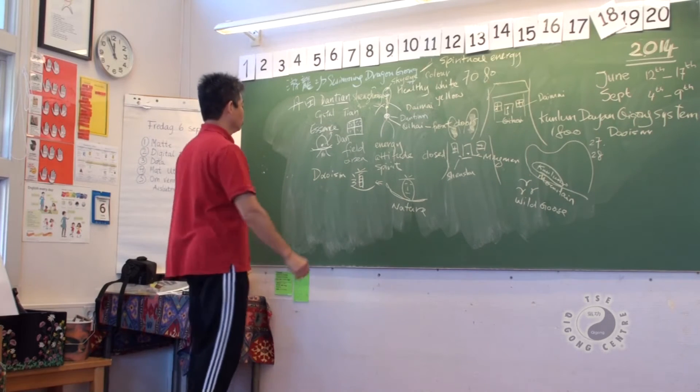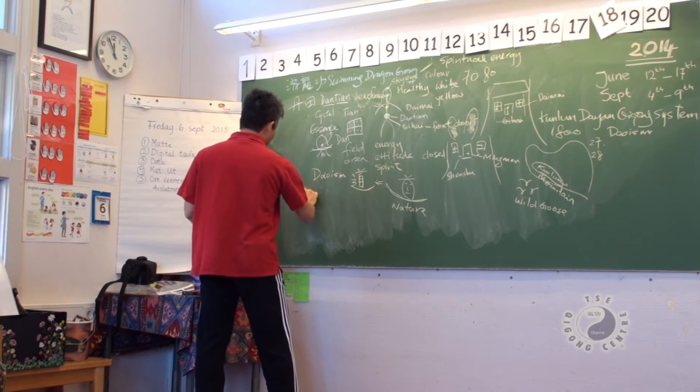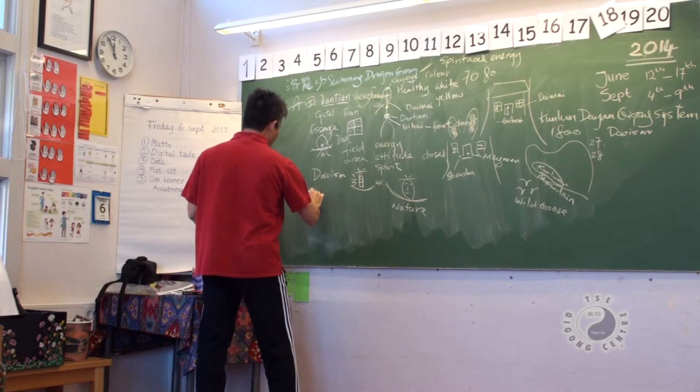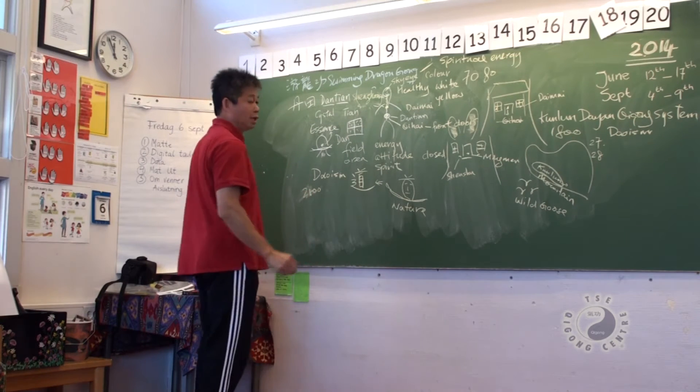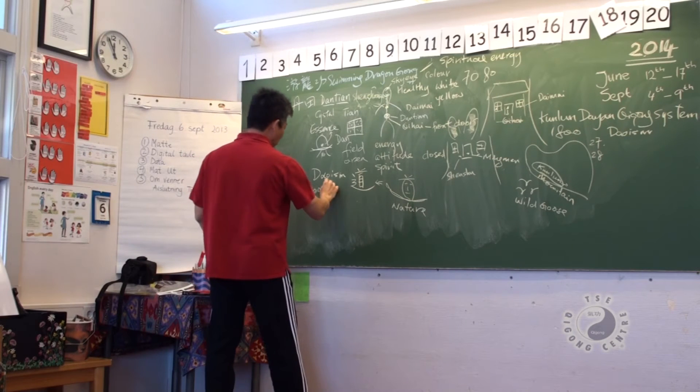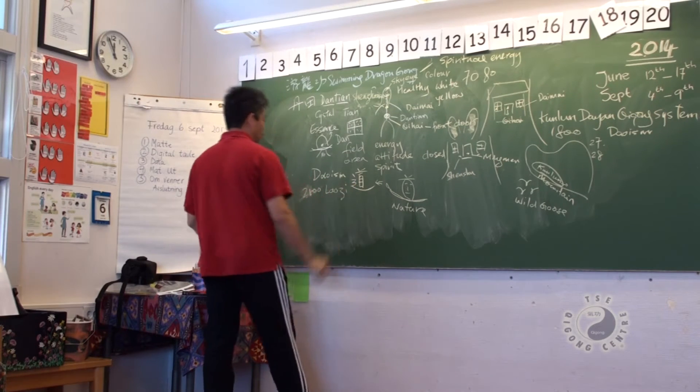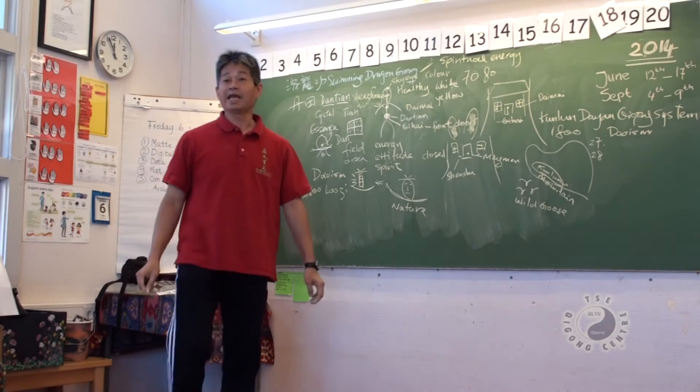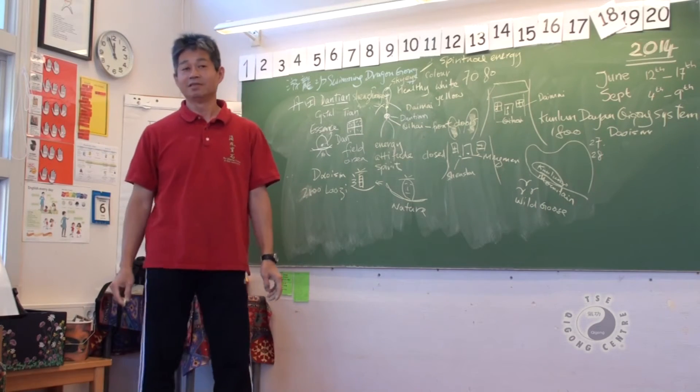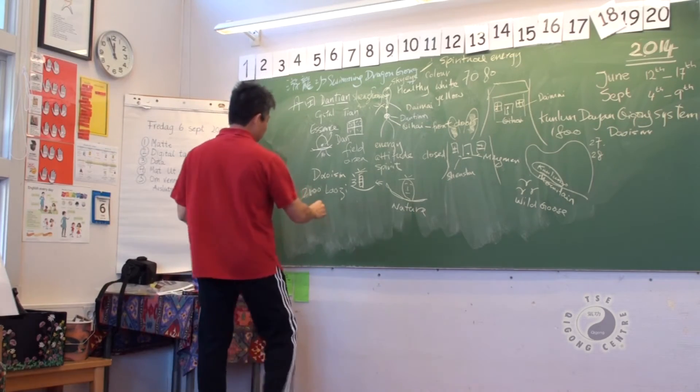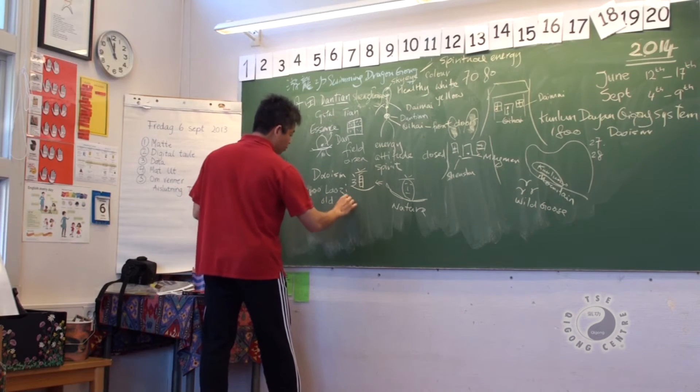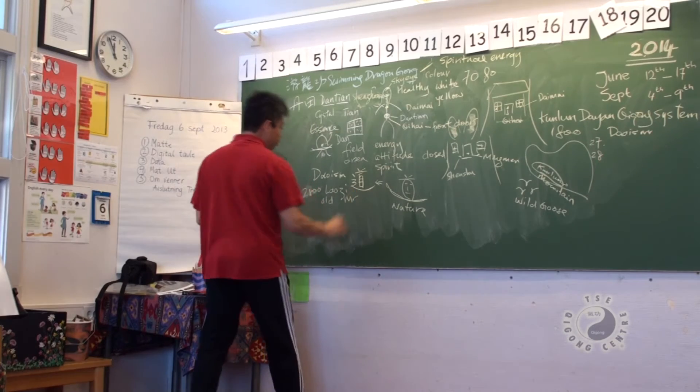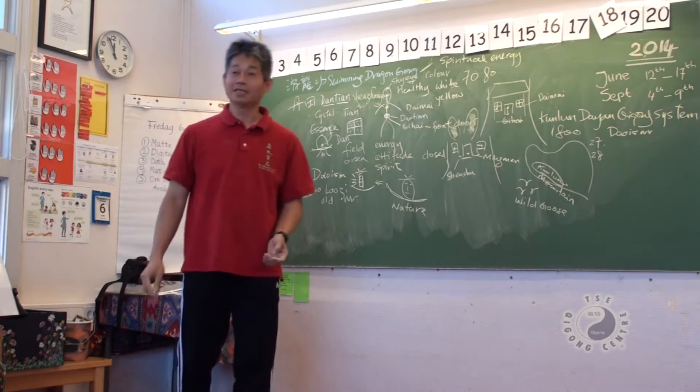It comes from two thousand eight hundred years ago, a master. Lao. But this is a nickname. Lao means old. Zi means mister. Mr. old man. That's his name.